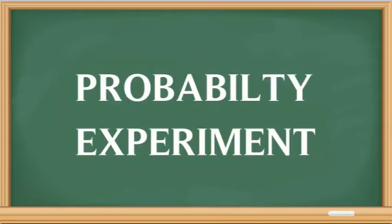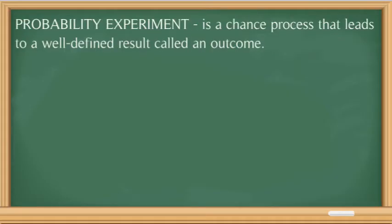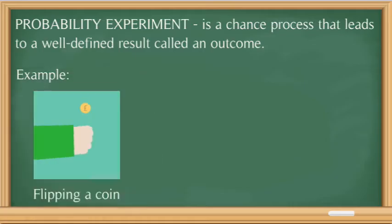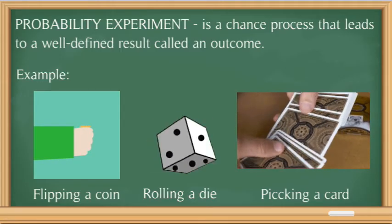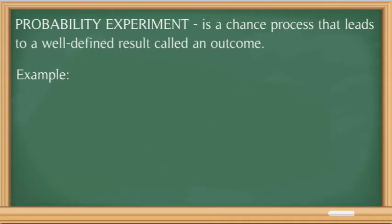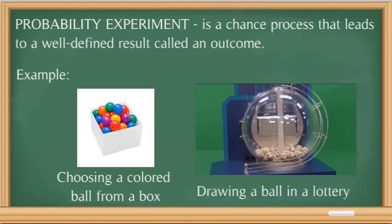Now, what is a probability experiment? A probability experiment is a chance process that leads to a well-defined result called an outcome. Examples of a probability experiment include: flipping a coin, rolling a die, picking a card from a deck of 52 cards, and choosing a colored ball from a box.